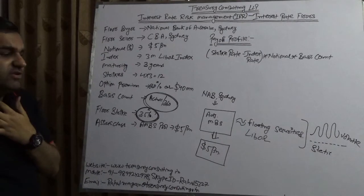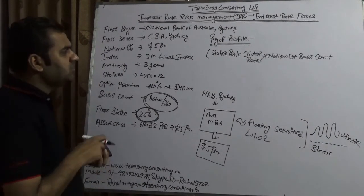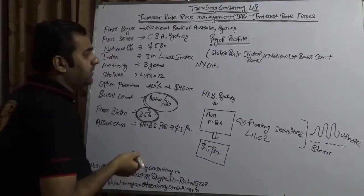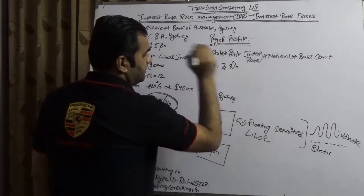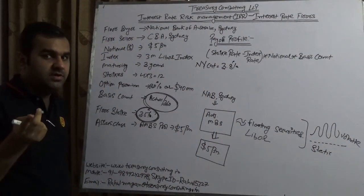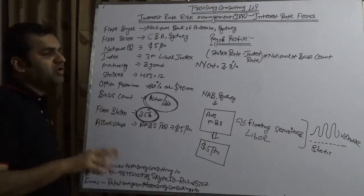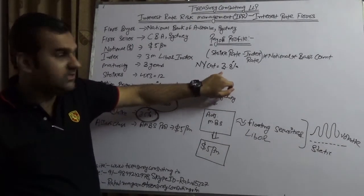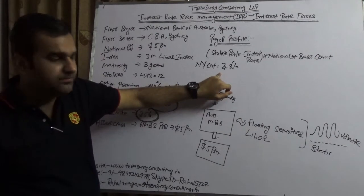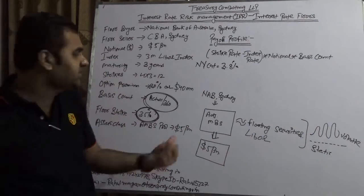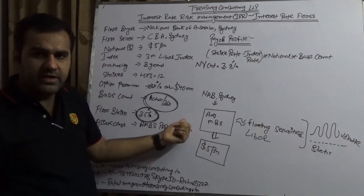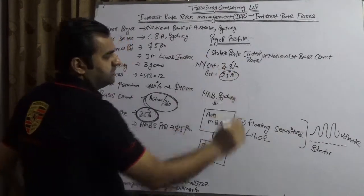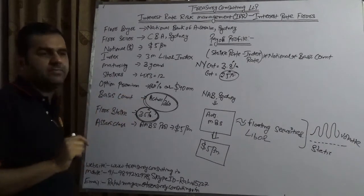We have to look at the cut — the New York cut. Assuming the New York cut is published at 3.8%: had it been a cap, NAB would have received 3.9% minus 3.5%. But this is not a cap. If the New York cut or the 3-month LIBOR is at 3.8%, that is good — they are getting a good income. But for that, they have already paid the premium. However, assuming this cut is at 2.5%, and they have a floor of 3.5%, they are now going to receive the difference.